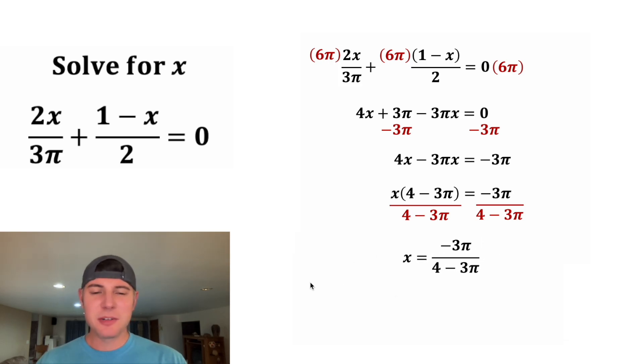This is probably fine as an answer, but you can still kind of simplify it. On top, we can factor out a negative 1. So instead of negative 3π, we have negative 1 times 3π.